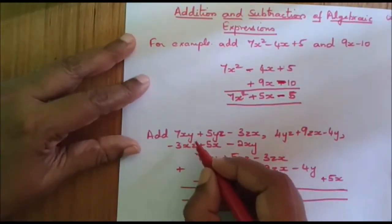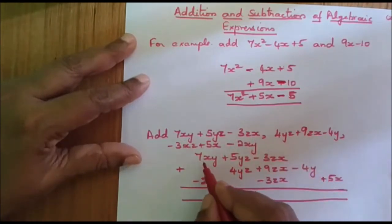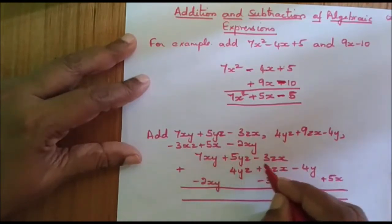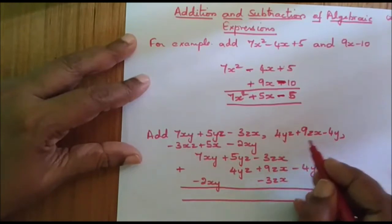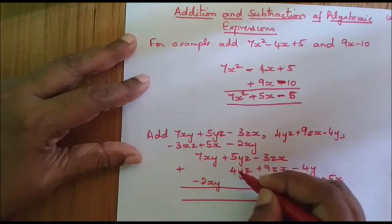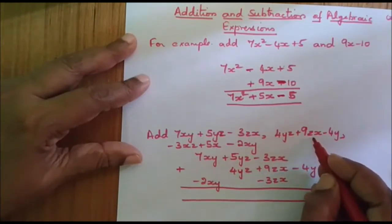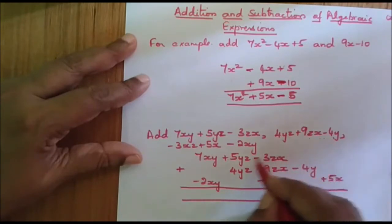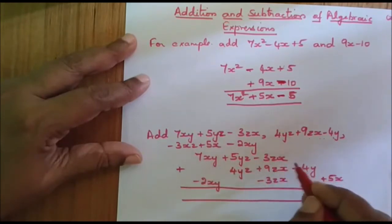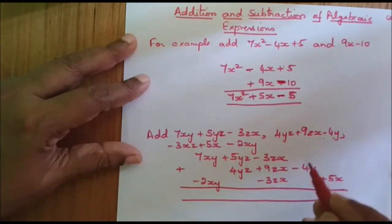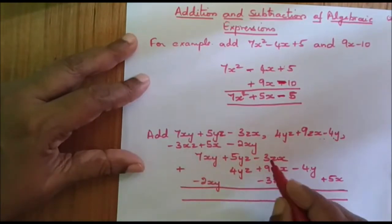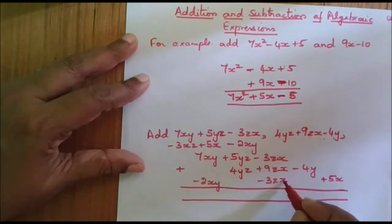Now let us take the next example: 7xy plus 5yz minus 3zx. We write the first expression as it is. Now the second expression includes 4yz, which is placed under 5yz, and plus 9zx placed under minus 3zx. Minus 4y has no like term in the first expression, so we write it outside. For the third expression, minus 3xz is written below the zx column, plus 5x is written outside since there is no like term, and minus 2xy is written below 7xy.